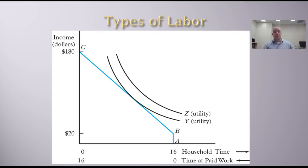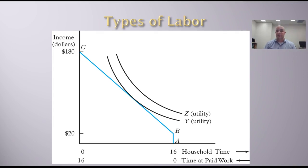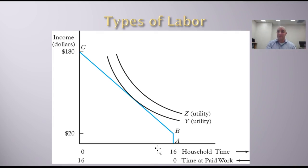What we're going to do is revisit the labor supply curve and the decision to work based on budget constraints and preferences. Previously we looked at income and leisure; we're just going to replace leisure with household production time. So this will cover working not for pay as well as leisure — anytime you're not working for pay. It's going to be leisure and household production combined.